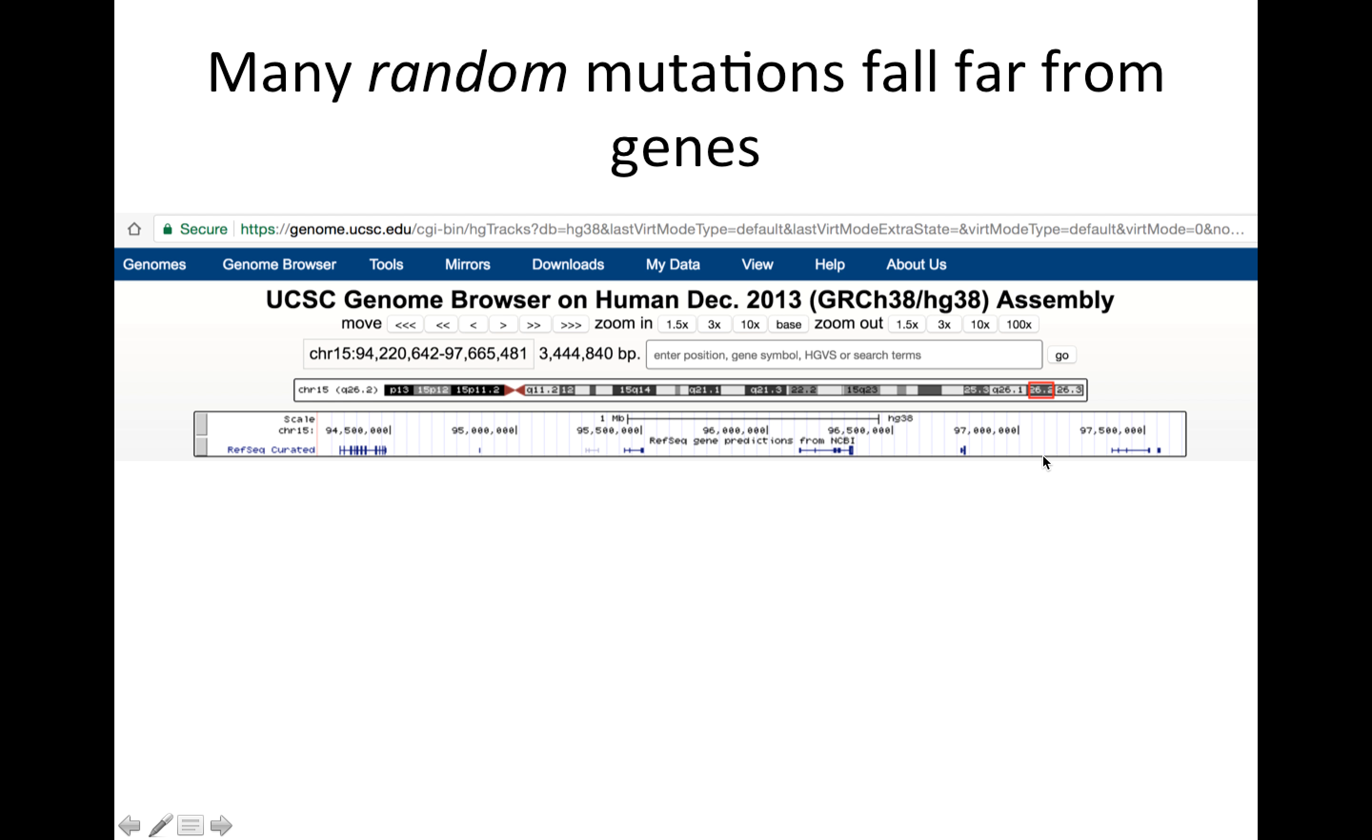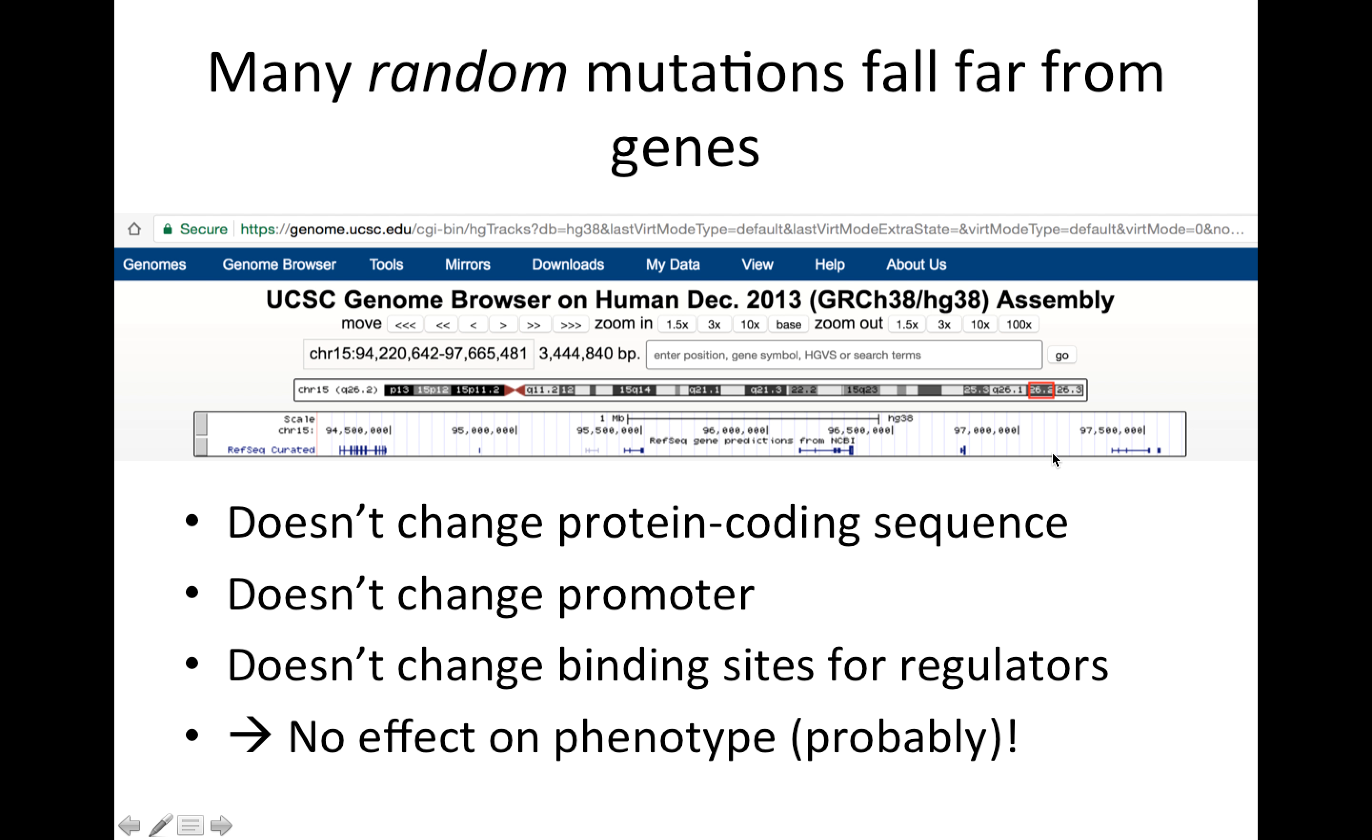And so if we get a mutation there, right, if we get a random mutation here, we don't expect it to change the protein coding sequence. It's not near a gene, so it won't change the promoter, and it probably won't change binding sites for the kind of regulators we've discussed. So we would expect if a mutation happens here, or if it happens here, or maybe if it happens in the middle of an intron, we expect that it probably will not have an effect on the phenotype.